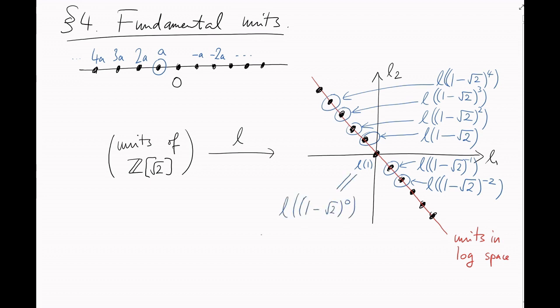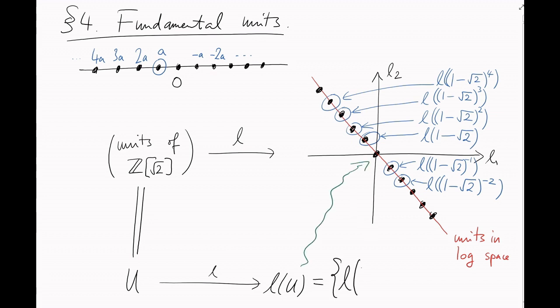And that's all the points on this lattice. In other words, if u is the set of units in z to join root 2, we now completely understand L of u. In other words, the image of u in logarithm space. It's just this lattice, made up of logarithms of integer powers of 1 minus root 2.